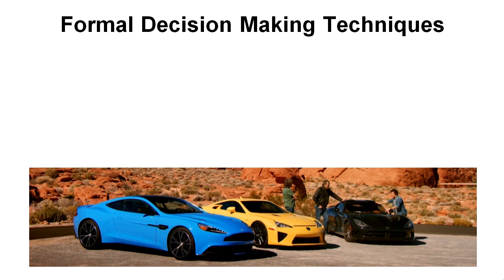We've got four different techniques to step you through in this video. The first one is the dominant criterion method. Basically this just means you look at what is the dominant criterion, and if it is the most important and the other criteria below it aren't very important, then you just select on that one. It's pretty straightforward.